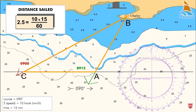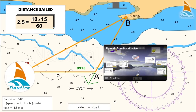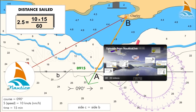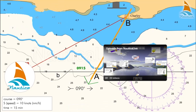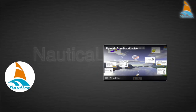The distance traveled from point A to point C — which is 2.5 nautical miles — is equal to the distance from our position to the object when we are at the beam position. So the distance traveled from 0900 to 0915 is equal to the distance from the vessel at 0915 to the Charlie tower.